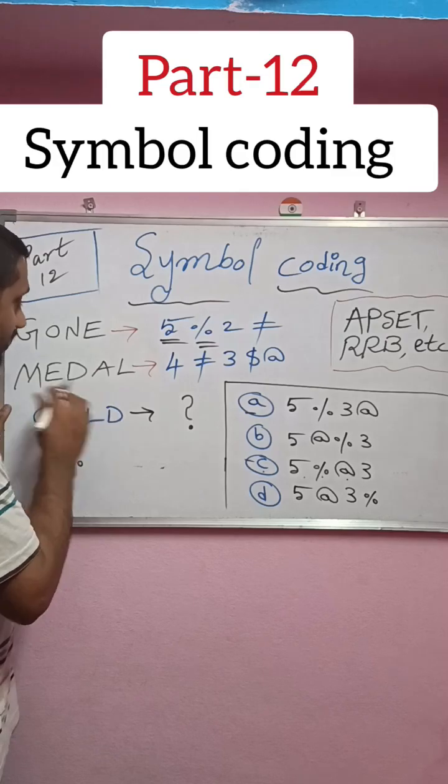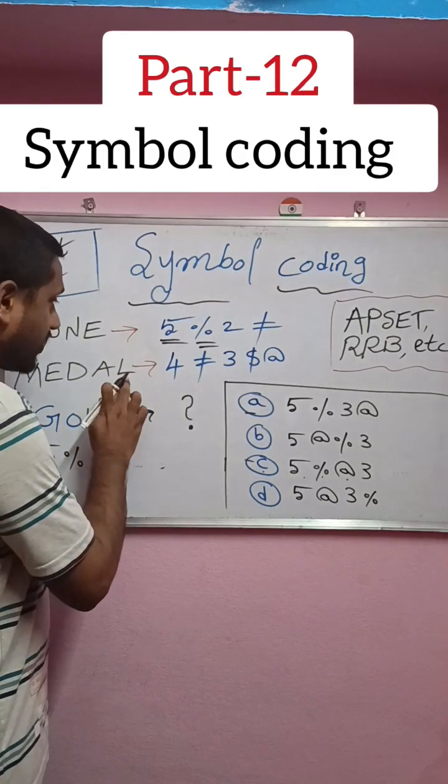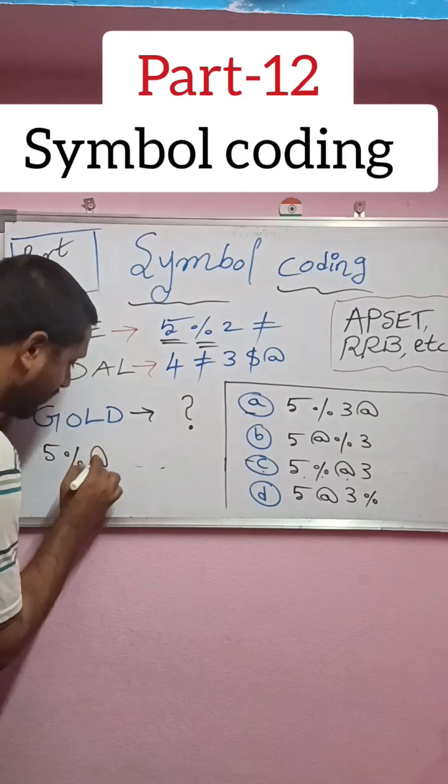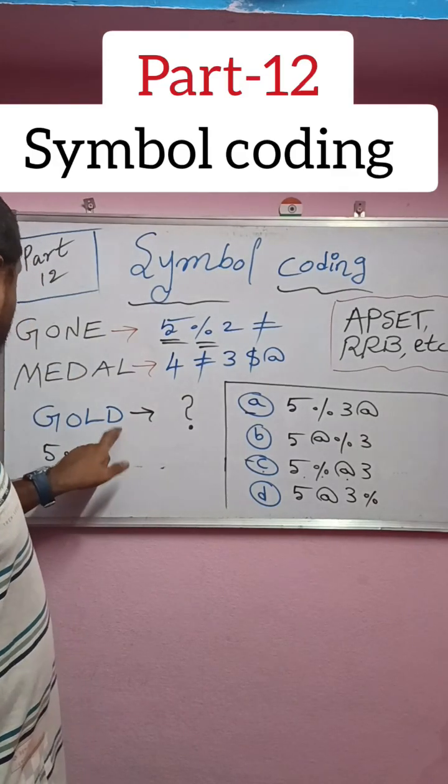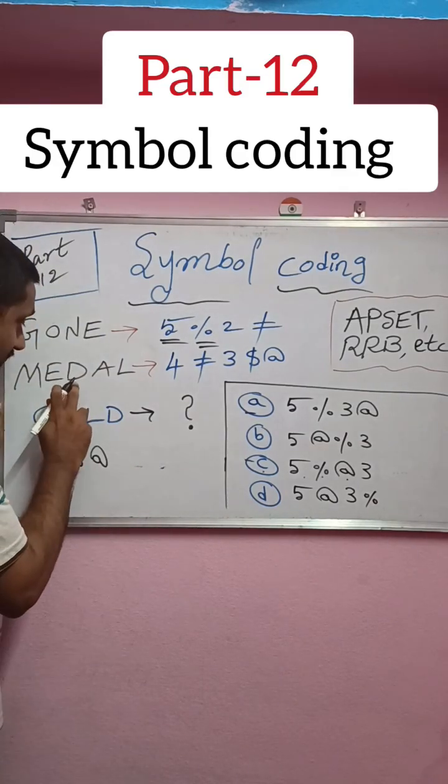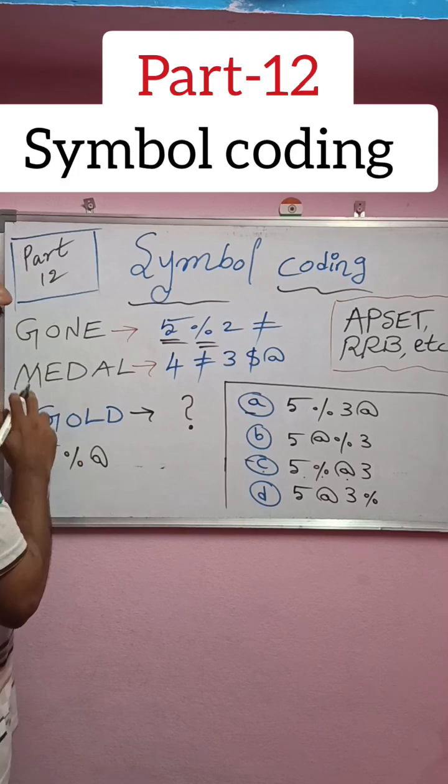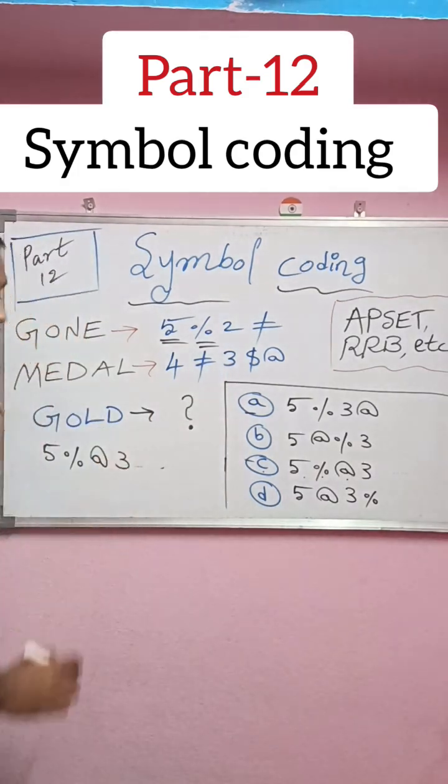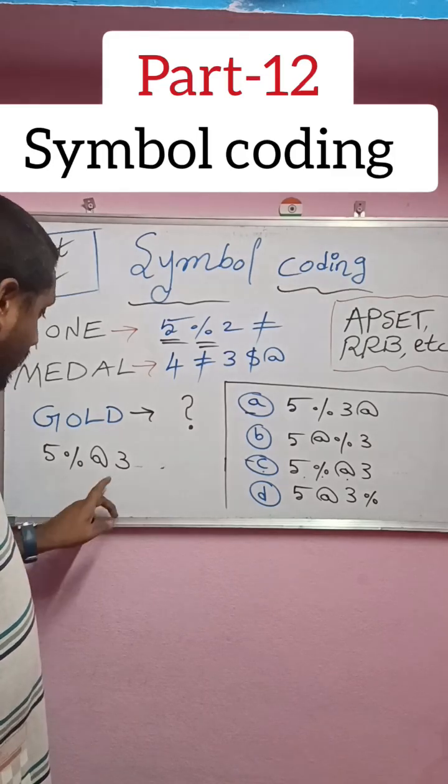You observe carefully L in this second code language. Last letter L is coded as at the rate. Similarly, the last one is D. Where is D in this second code language? Third letter D is coded as 3. So the answer is 5 percentage at the rate 3.